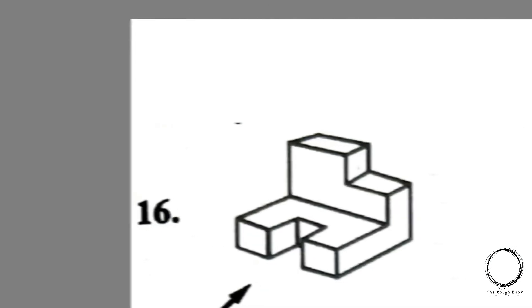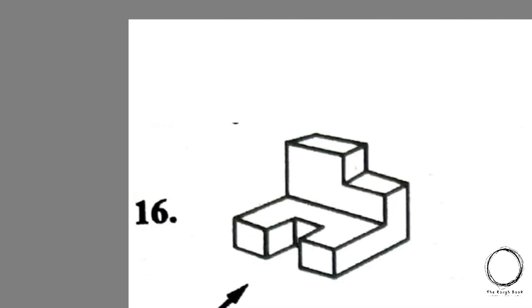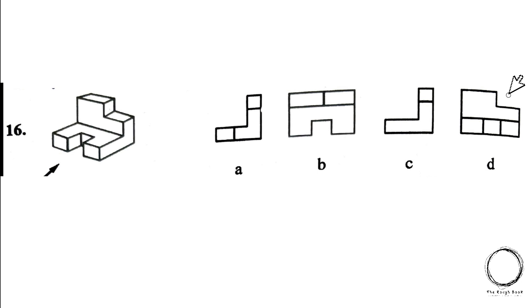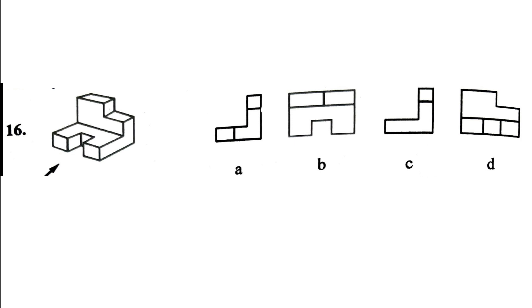Now let's look at the same type of questions in reverse — a view will be given and you will have top, side, and front view as your options. In this case, there is an arrow marked at the left-hand side and we have to select the option for the left elevation. Observing the lines of the object, option D has a puncture at the right-hand side, and the right answer is option D.